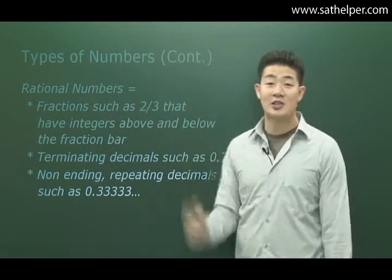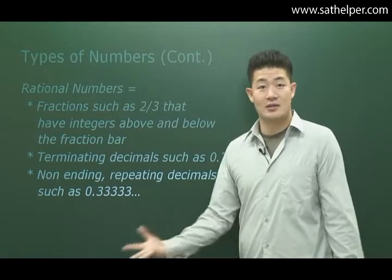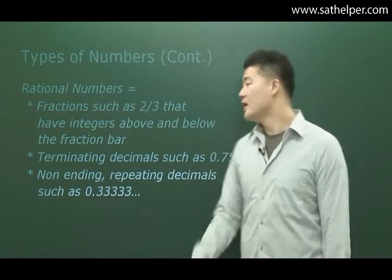Well 0.75 is just a decimal equivalent of a fraction, right? 0.75 is the same thing as 3 over 4.